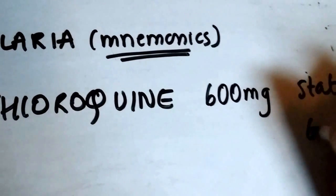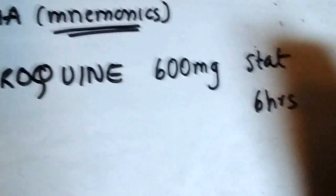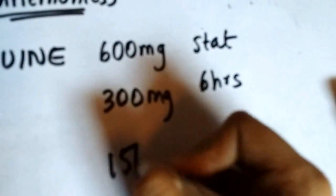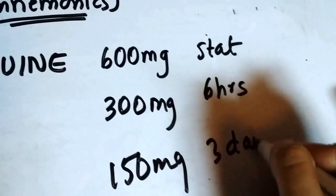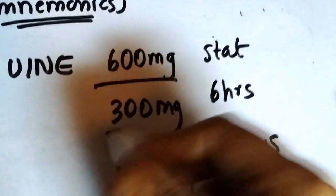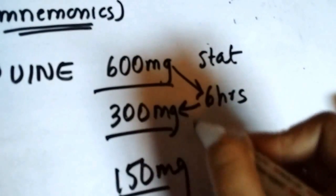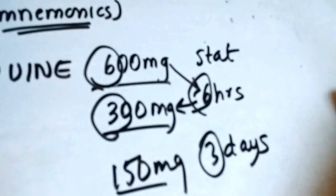Chloroquine is administered 600 milligrams stat. After six hours you give 300 milligrams base, and then you give 150 milligrams for three days. You see how the dose became half, and the three is carried over for three days.